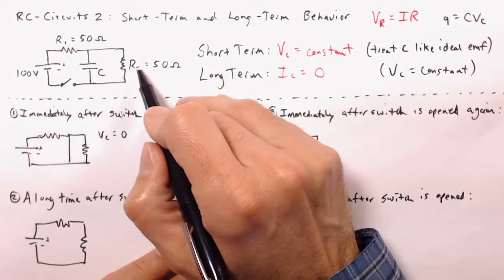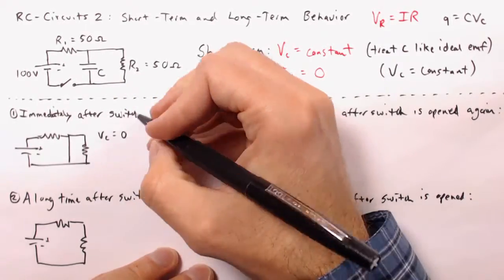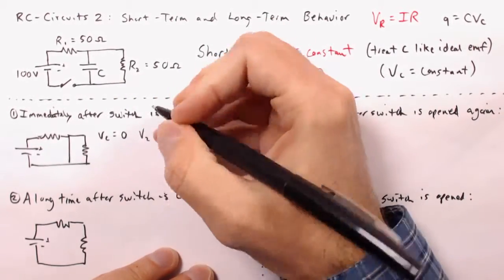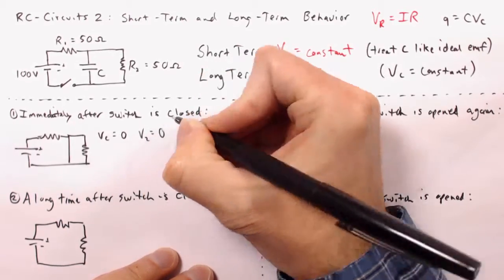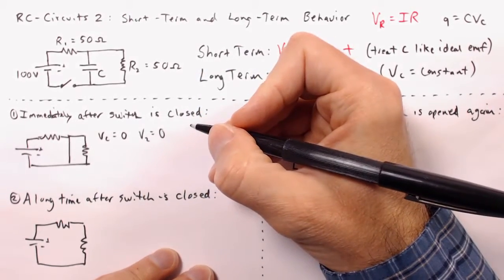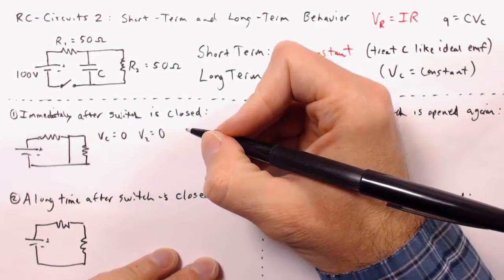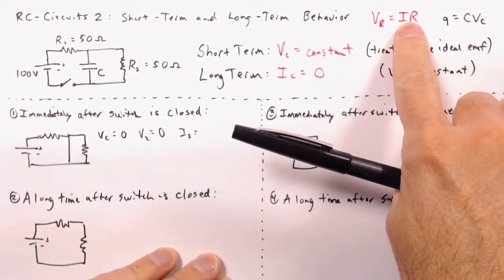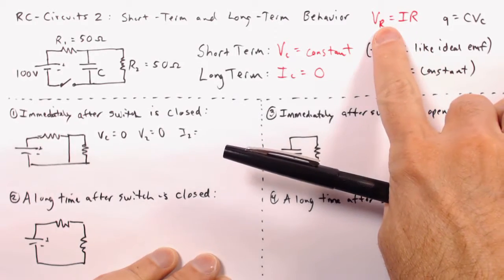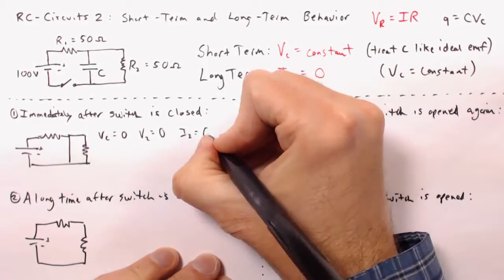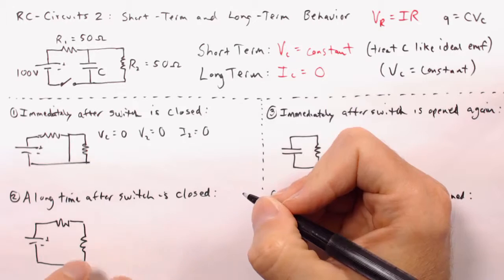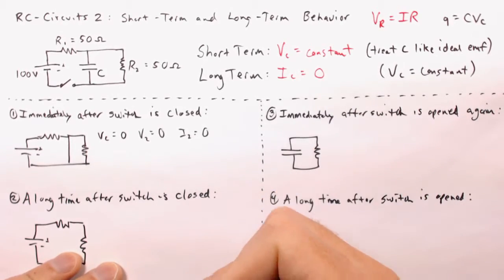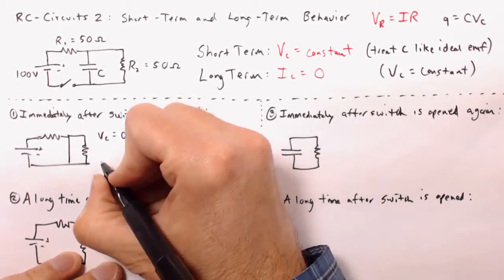Now the C is in parallel with R number two, so that means the voltage in resistor number two is also zero. They're always the same voltage when the two elements are in parallel. Now we can find the current through resistor number two because the voltage and the current are proportional, and in this case one of them is zero, and therefore the other one must be zero.